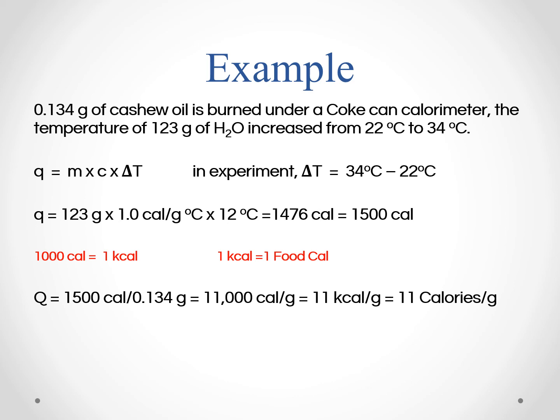So we want to eventually get to food calories. You can see that conversion in red, which is one kcal equals one food Cal. So from going from calories to kcal, you just divide by a thousand. So we have 11 kilocalories per gram.